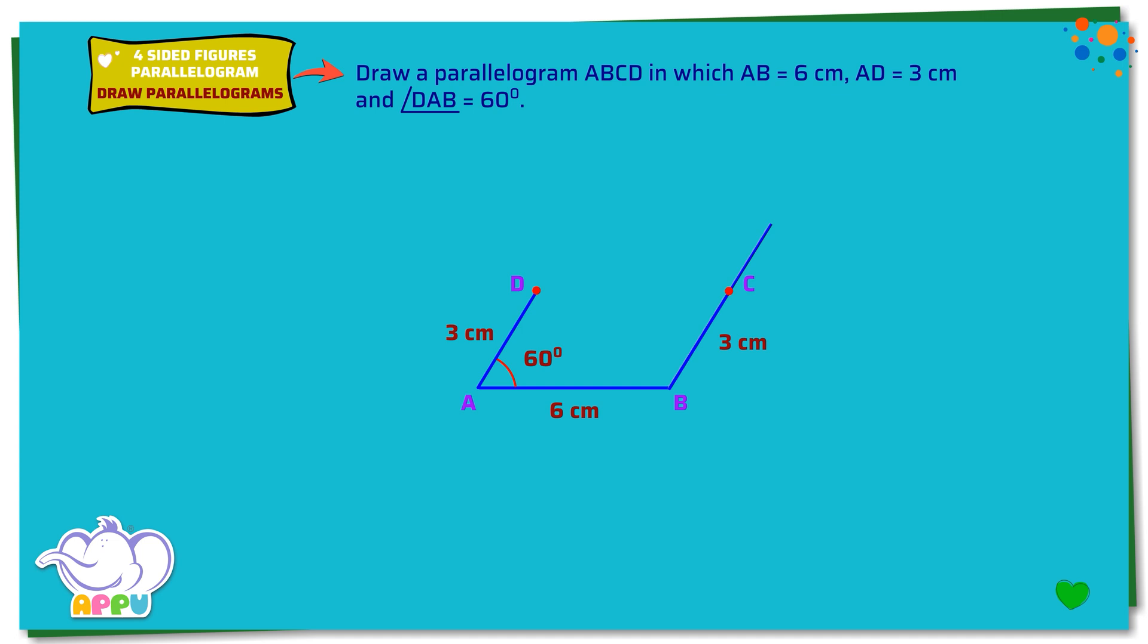Step 3. Join DC. We mark single arrows to indicate AB is parallel to CD, and two arrows to indicate AD is parallel to BC. Excellent!